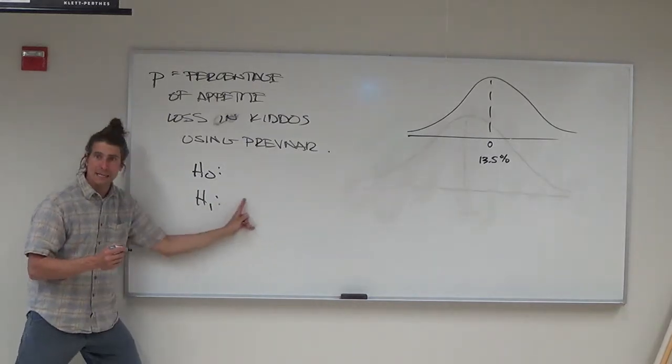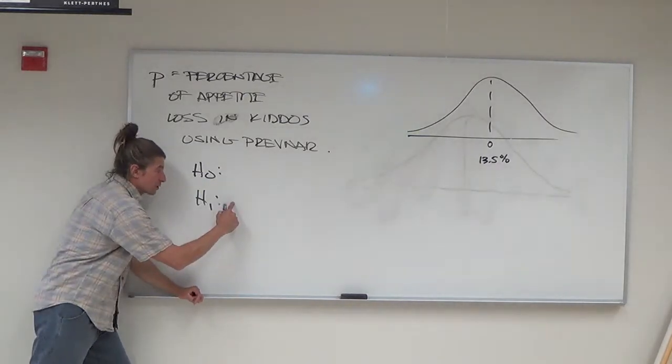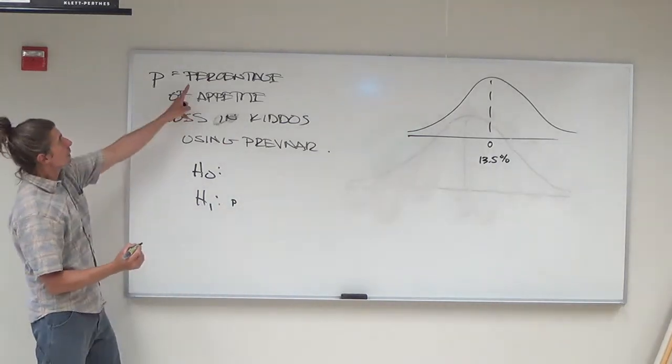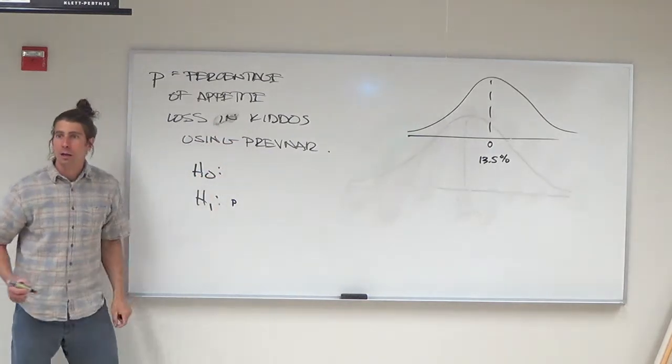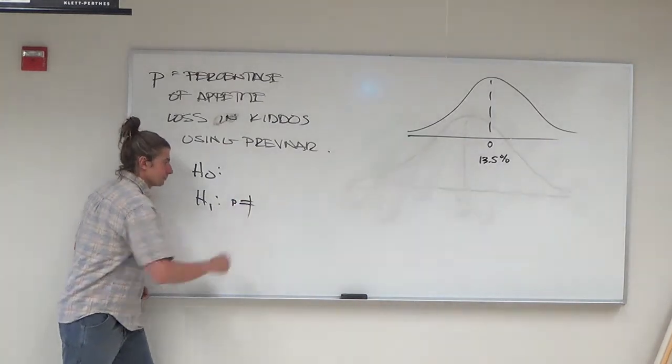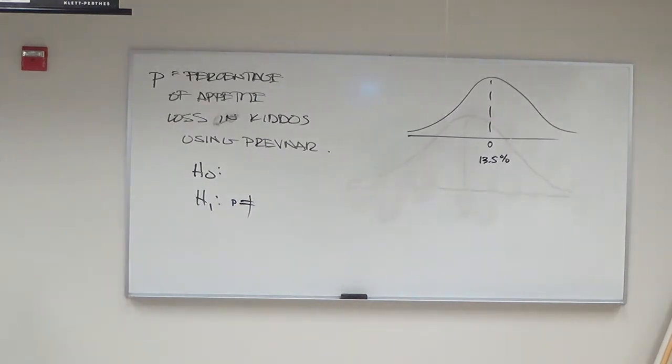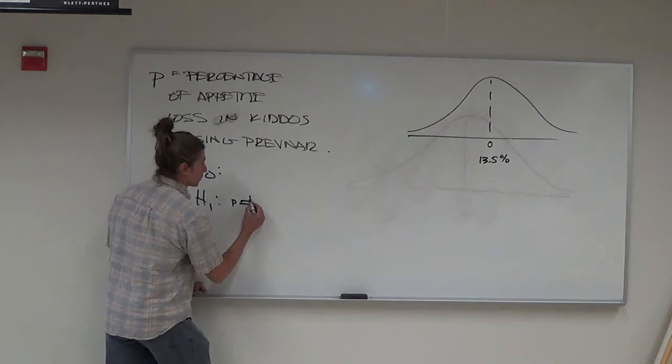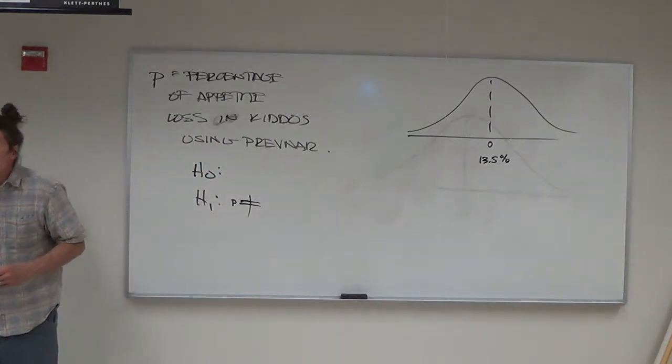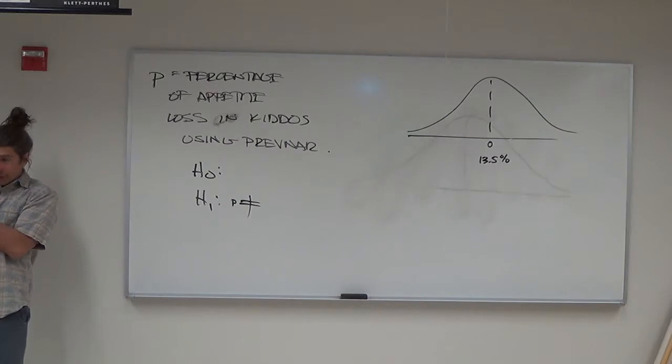The instructor works through the symbols: little p (the percentage of appetite loss in kiddos using Prevnar) and asks how to know if it's less than or greater than. Students identify that since they're testing if it's different, they should use "does not equal." The instructor enthusiastically writes the not-equals sign, explaining this way you don't have to pick - you can let the statistic show you where it is.